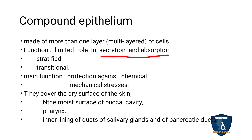Compound epithelial tissues are found on dry surfaces such as the skin, nails, and hair, where the outer surface is dry. They are also seen on moist surfaces such as the buccal cavity, pharynx, the inner lining of ducts of salivary glands, and pancreatic ducts.